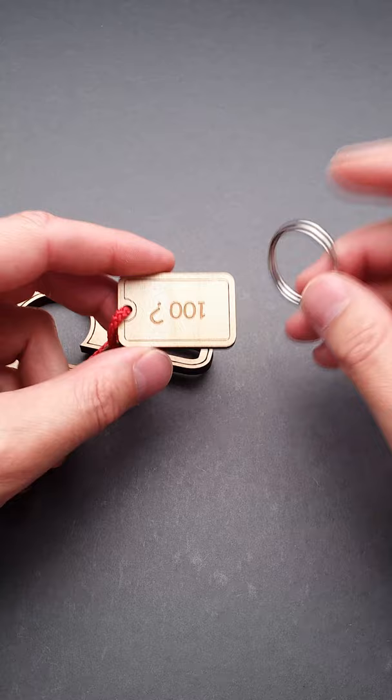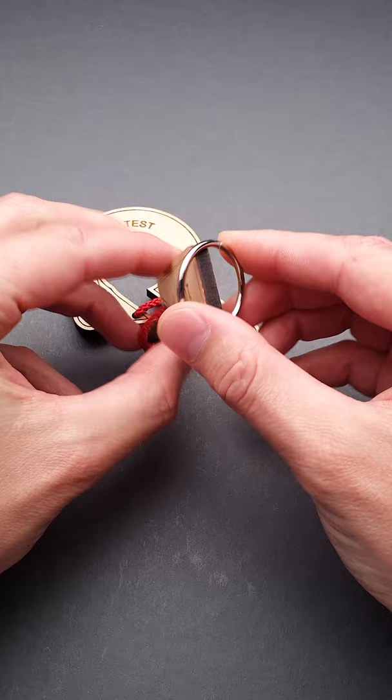So first of all, I want to show you that the 100 piece is a little bit bigger than the ring and you can't put it through the ring since a lot of people asked. And now I will show you the solution.